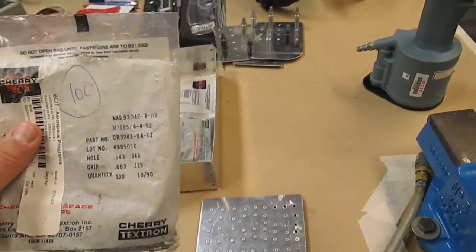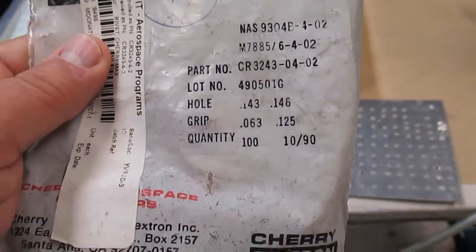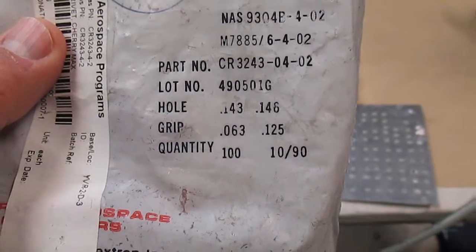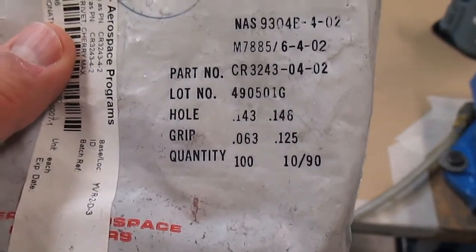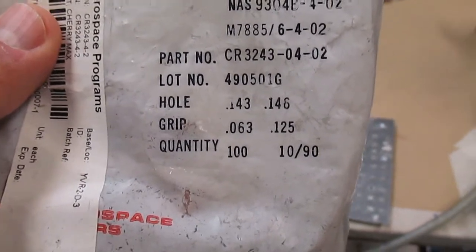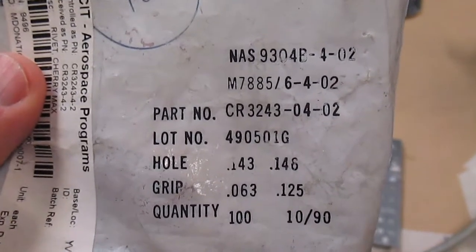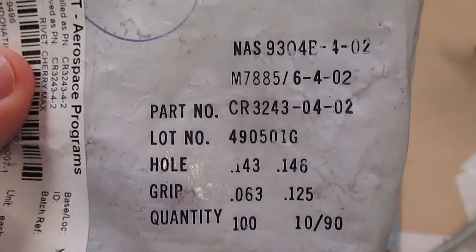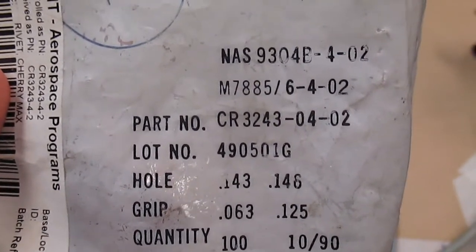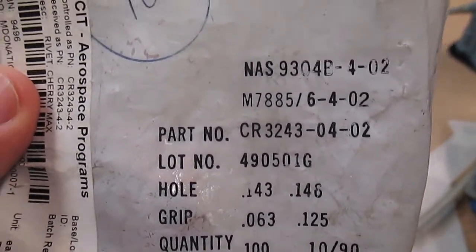We're going to use these guys. If you dig through there you can see this is a CR3, so we know absolutely that it's a Cherry Max. It's a CR32, so the two tells us it's going to be made out of 5056—that's the outer barrel material. The four tells us it's an oversized, so we're definitely not going to use standard drills here. We're going to be using oversized, and it's a dash zero four, so one-eighth diameter.